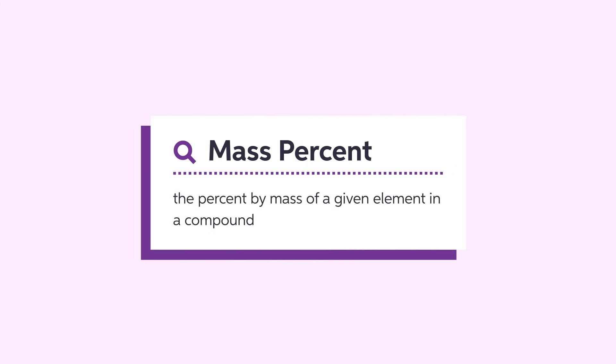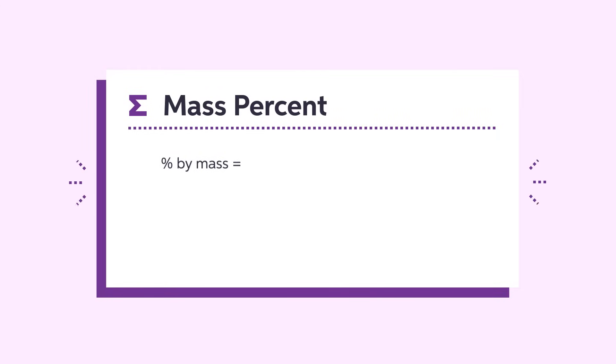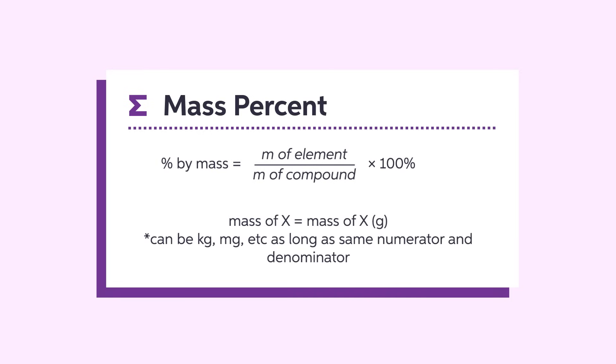Percent composition, or mass percent, is the percent by mass of a given element in a compound. It is often used by chemists to determine the formula of an unknown sample after chemical analysis. The mass percent of a compound is calculated by dividing the mass of the element by the mass of the compound multiplied by 100. The sum of each element's mass percent equals 100%.